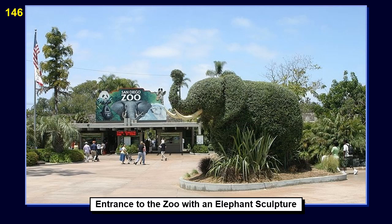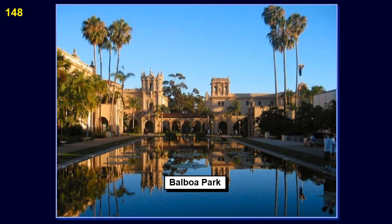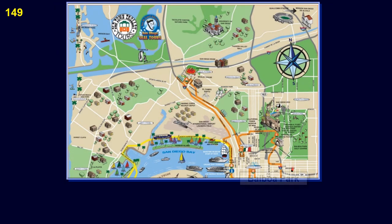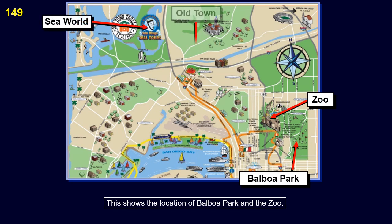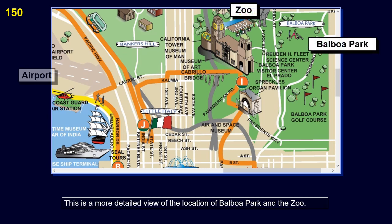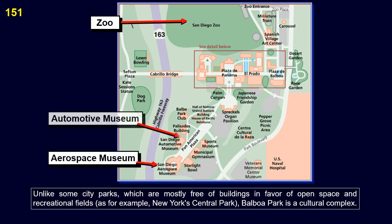This is the entrance to the zoo featuring an elephant sculpture. Number 2: Balboa Park. Balboa Park is a 1,200-acre, 5-square-kilometer urban cultural park in San Diego. This shows the location of Balboa Park and the zoo. Unlike some city parks which are mostly free of buildings in favor of open space and recreational fields — for example, New York's Central Park — Balboa Park is a cultural complex. This is the Museum of Man in Balboa Park.